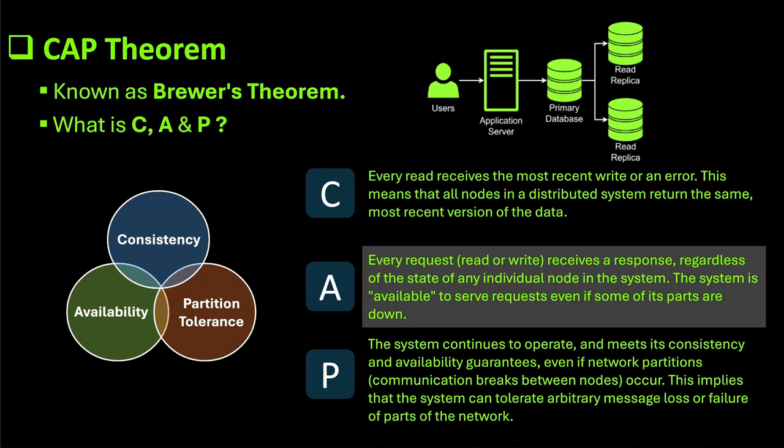Prioritizing availability can mean that the system may serve stale data during network partitions because it avoids coordination among all nodes. This is particularly useful in applications where user experience and responsiveness are critical.